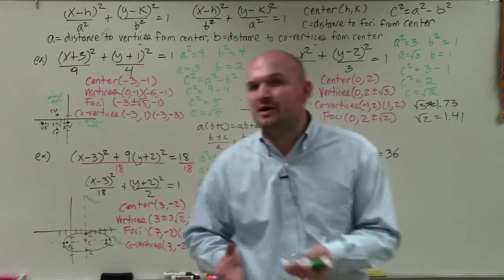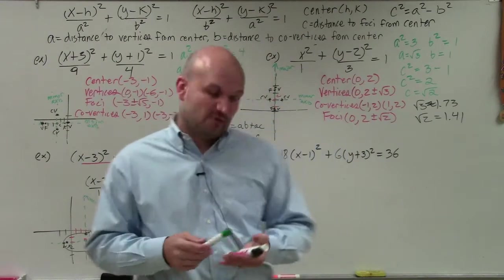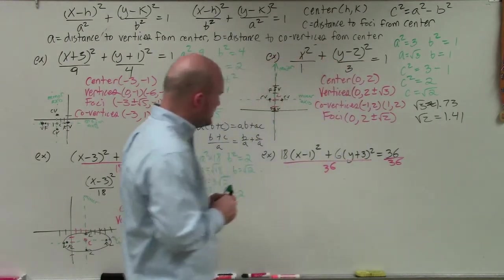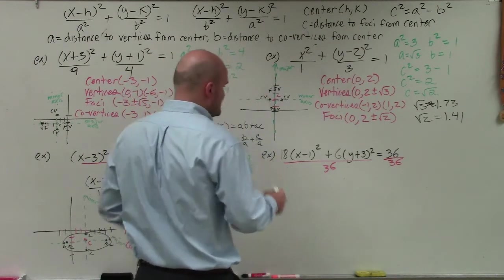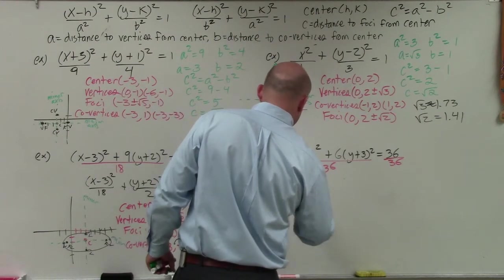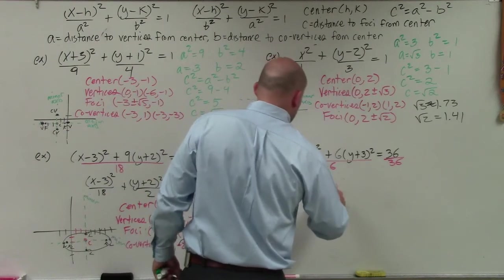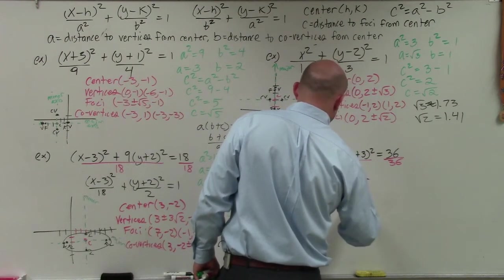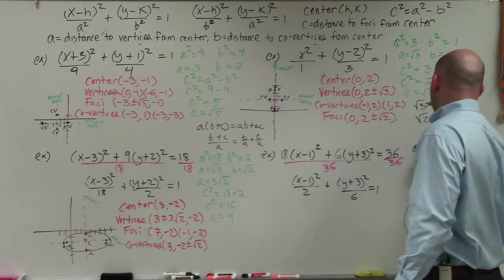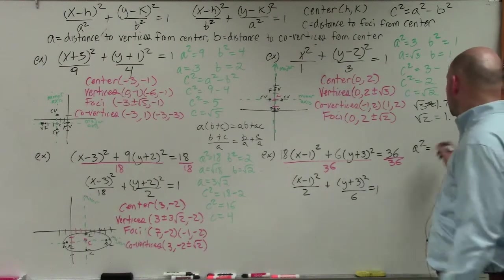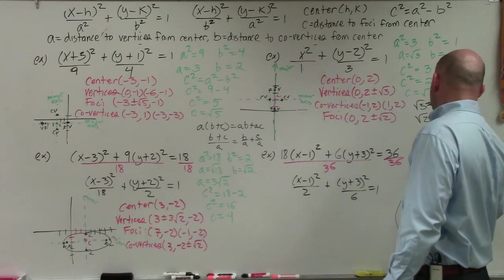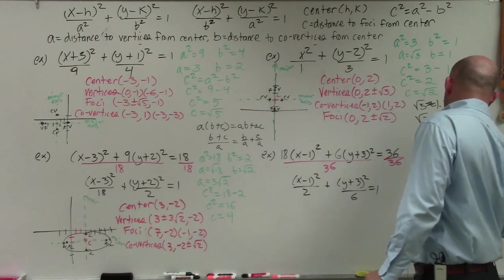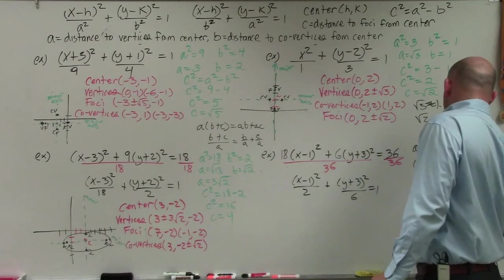Last example — it's not set equal to 1, so we divide by 36 on both sides. 18 over 36 is one half, and 6 over 36 is one sixth. Rewriting: x minus 1 squared over 2 plus y plus 3 squared over 6 equals 1. Since a squared is the larger number, a squared equals 6 and b squared equals 2. So a equals square root of 6, b equals square root of 2. For c squared: 6 minus 2 equals 4, so c equals 2.